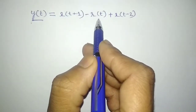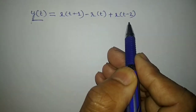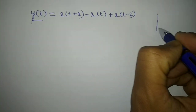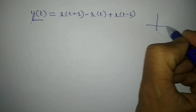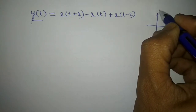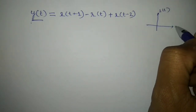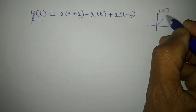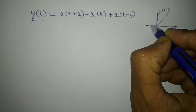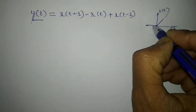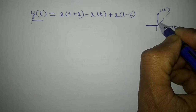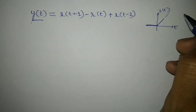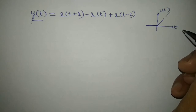First I should know what the given signal r(t) is. If I want to sketch r(t), it looks like a ramp signal. From minus infinity to 0 the signal is 0, and from 0 onwards it is a linearly varying signal. This is how r(t) looks.